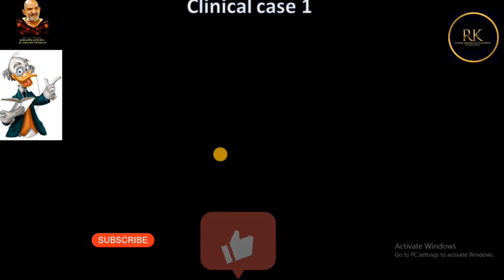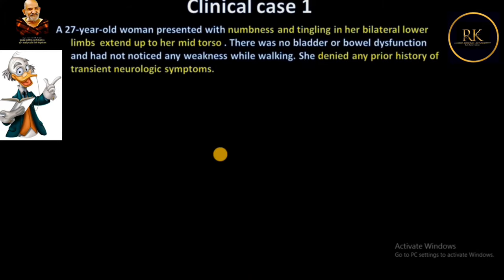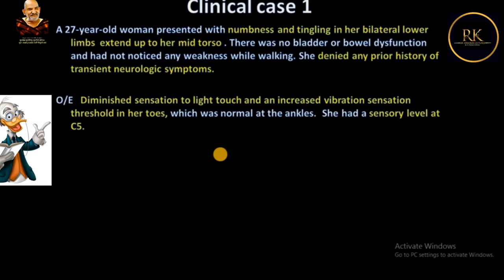Let us start our presentation with a clinical case. A 27-year-old woman presented with numbness and tingling in her bilateral lower limbs extending up to her mid-dorsal level. There was no bladder or bowel dysfunction, and she had not noticed any weakness while walking. She denies any prior history of transient neurological symptoms. On examination, there was diminished sensation to light touch and increased vibration sensation threshold in her toes.